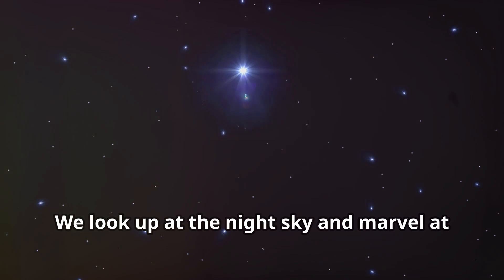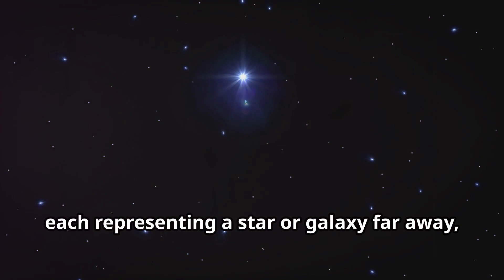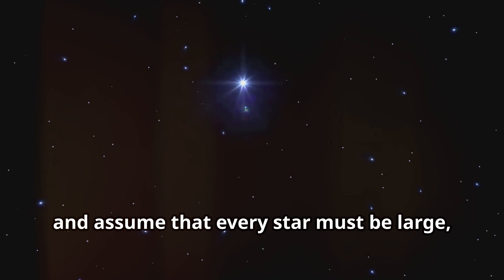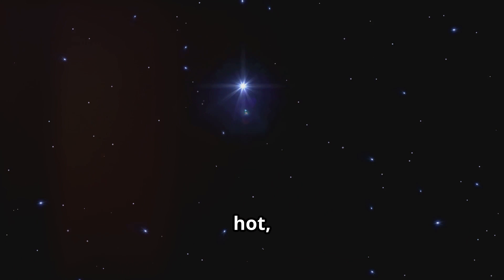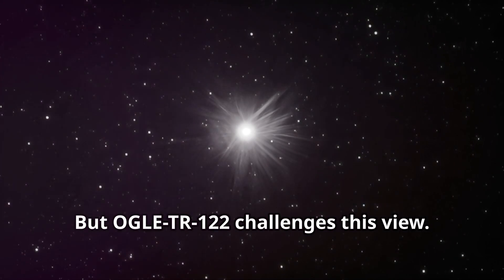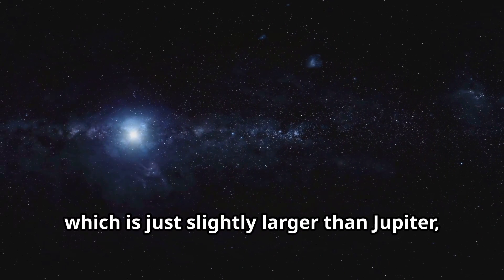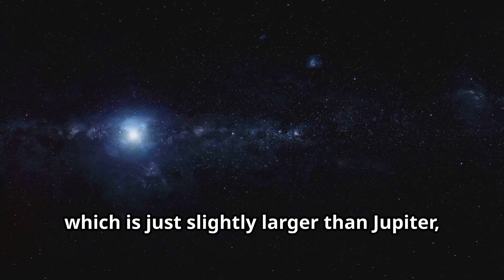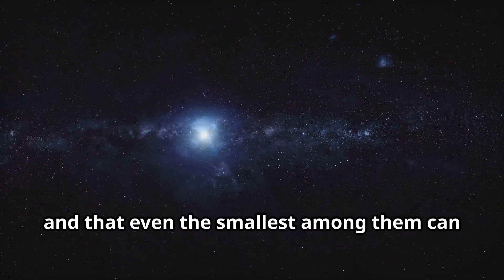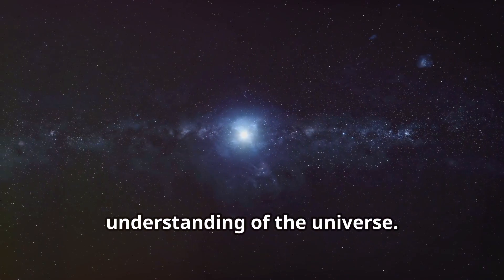Most people associate stars with size and brightness. We look up at the night sky and marvel at the distant pinpoints of light, each representing a star or galaxy far away, and assume that every star must be large, hot and intensely powerful. But OGLE TR-122 challenges this view. This tiny star, which is just slightly larger than Jupiter, shows that stars can vary drastically in size.